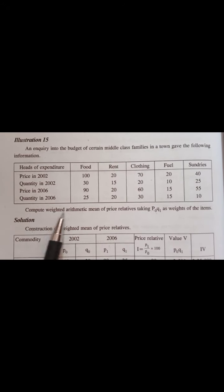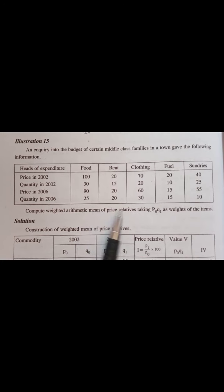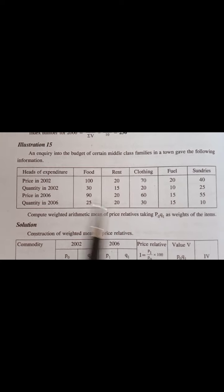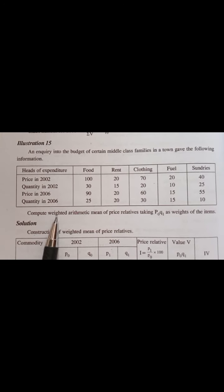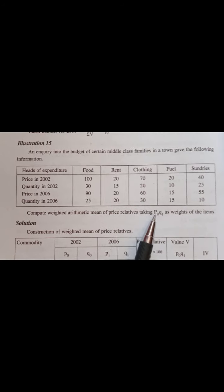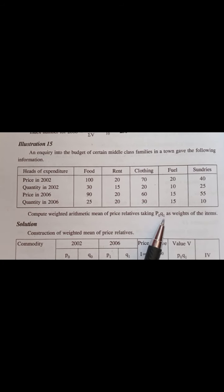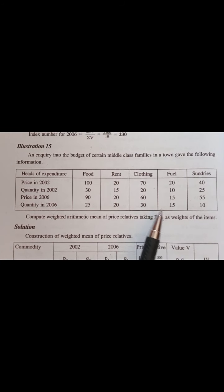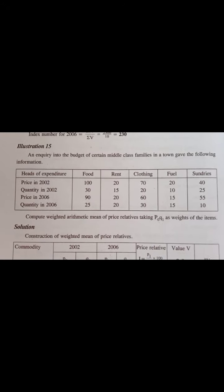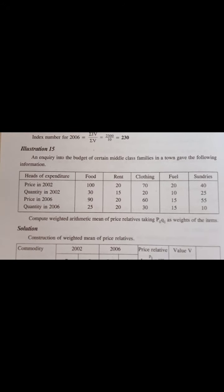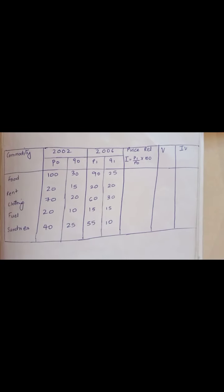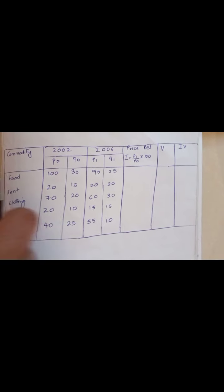Now what to do? Compute a weighted arithmetic mean of price relative, which means you have to find the average method for weighted index taking P0Q1 as weights of the item. You have to identify P0 and Q1 so that the product of that will give you the weights of the item. Such an easy question, right? This is an illustration from your textbook.